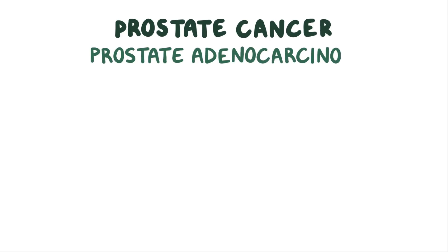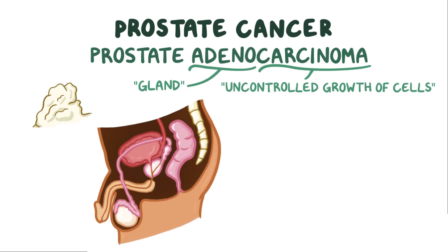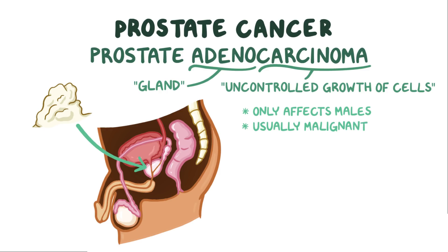Prostate cancer usually refers to prostate adenocarcinoma, where adeno means gland and carcinoma refers to uncontrolled growth of cells. So prostate cancer is a tumor or growth that originates in the prostate gland. Only males are born with a prostate, so this condition only affects males. Typically, when there's a prostate cancer, it's considered malignant, meaning that the tumor cells can metastasize, or invade and destroy surrounding tissues as well as tissues throughout the body.